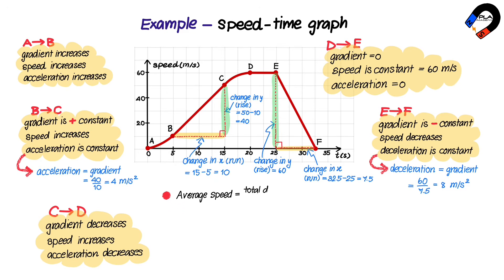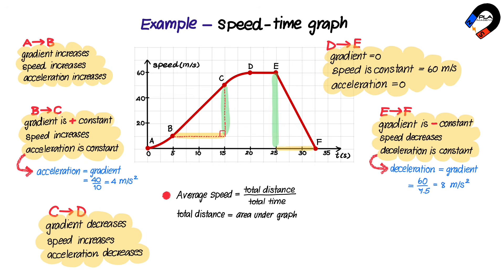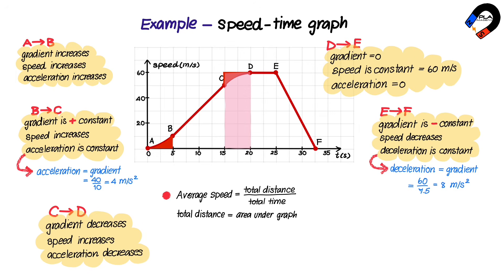We can find the average speed by dividing total distance moved by total time. The total distance moved equals the area under the graph. The area between A and B is approximated and combined with the area between C and D as a rectangle: 5 times 60 equals 300. The area between B and C forms a trapezium: (10 + 50) times 10 over 2 equals 300. The area between D, E, and F forms a trapezium: (5 + 12.5) times 60 over 2 equals 525.